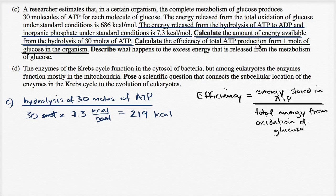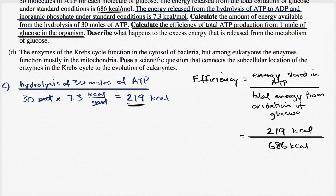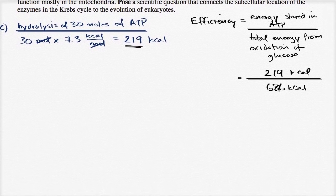So this is going to be equal to, they tell us the energy production when you oxidize one mole of glucose is 686 kilocalories per mole. So the denominator here is 686 kilocalories. And the numerator, the energy stored in ATP, for this particular organism it is able to produce 30 ATPs. The complete metabolism of glucose produces 30 molecules of ATP. So for every mole of glucose, it's producing 30 moles of ATP. And so we already figured that's going to be 219 kilocalories. So now we just have to do a little bit of math here, figure out what 219 divided by 686 is going to be.